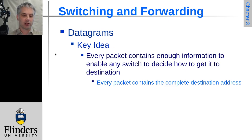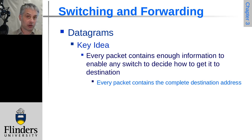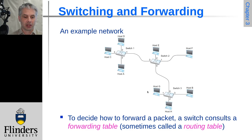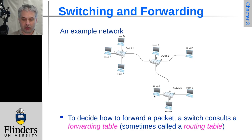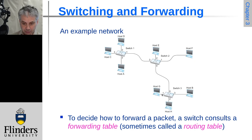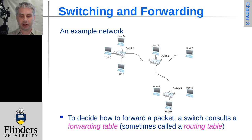For datagram forwarding, the concept is that each datagram has a source and destination address, so it has enough information for every switch along the way to decide where it should go next. Every packet contains complete destination information. Each switch has to have a forwarding table — also called a routing table — to know where each host is connected. For example, switch 3 has host G on port 1, a link to switch 2 on port 0, a link to host B, and a link to host H on port 2.